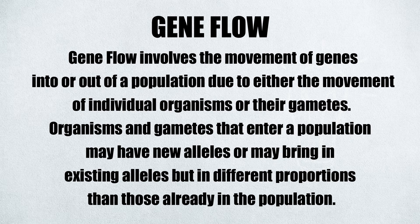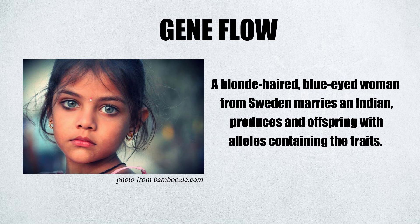Another mechanism is gene flow, which involves the movement of genes into or out of a population due to either the movement of individual organisms or their gametes. Organisms and gametes that enter a population may have new alleles or may bring in existing alleles but in different proportions than those already in the population. For example, a blonde-haired, blue-eyed woman from Sweden moves to India, marries an Indian, and produces offspring who now have the blue-eyed alleles.